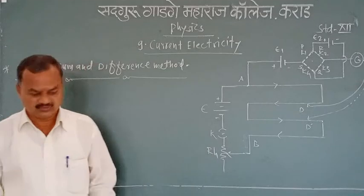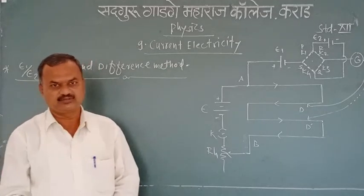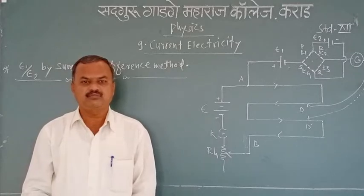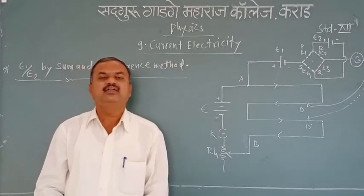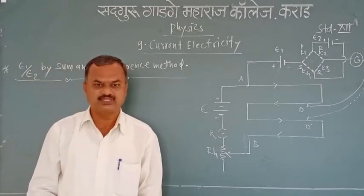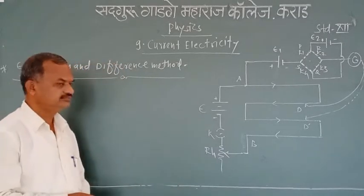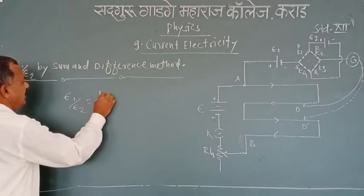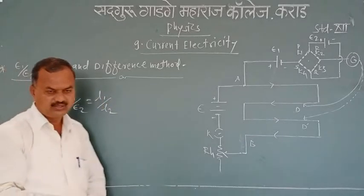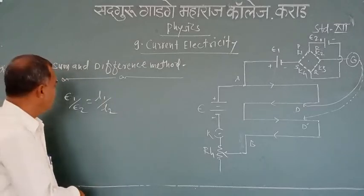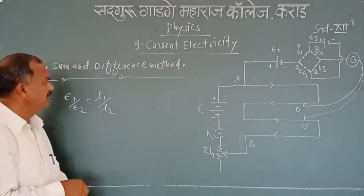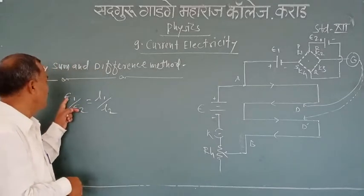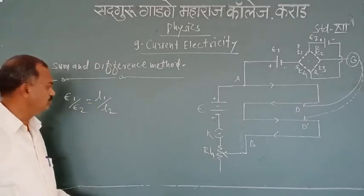In the last lecture, we studied the uses of potentiometer. The first use was to compare EMFs of two given cells by the direct or individual method, and we obtained the formula: E1 divided by E2 equals L1 divided by L2.